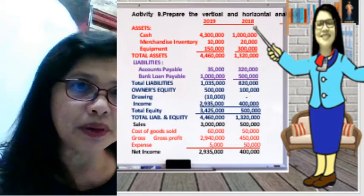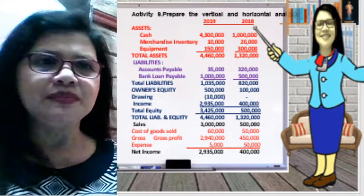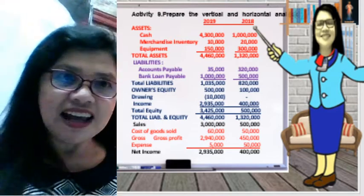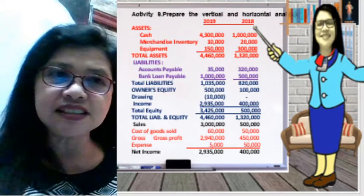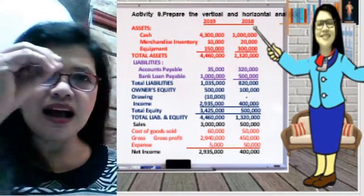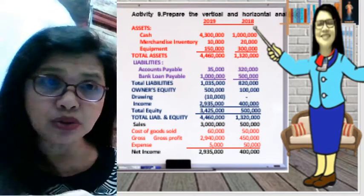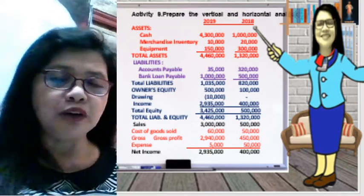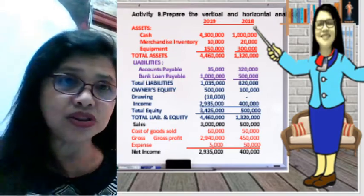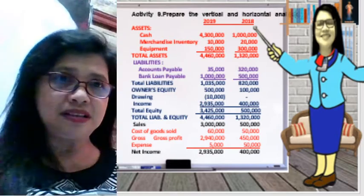Activity 9 tells us to prepare the vertical and horizontal analysis. When we say vertical analysis, we compare one account to the total of its group. For example, if it is an asset account, we compare the cash account to the total assets.